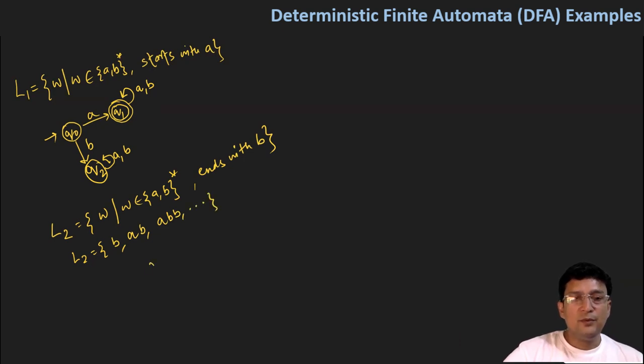Now the automata for this will be, let's take q3 state, which is the start state. It should end with B. So let's say there is a state q4, which is the final state, it has to end with B. That means that if another B comes at q4, it should remain at the q4 state only.